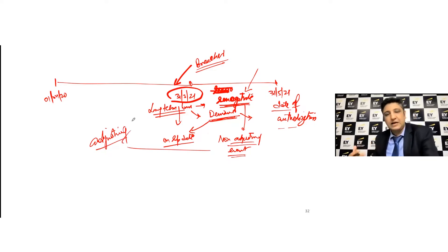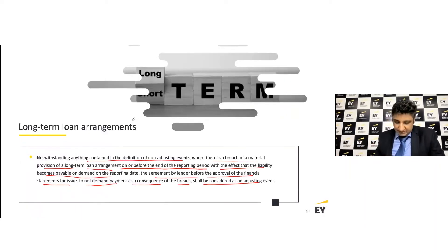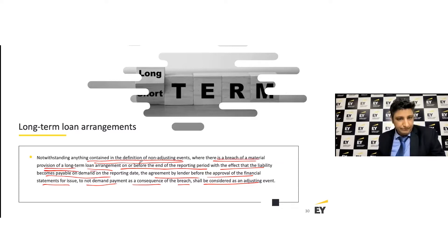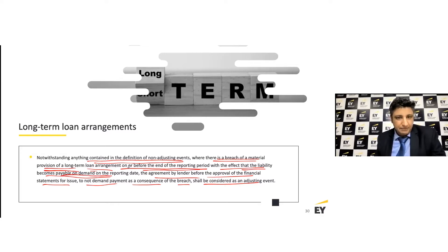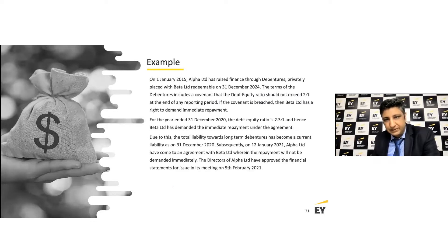This is an exception to the rule. Irrespective of what we have learned about non-adjusting events, when there is a breach of a material provision of a long-term loan on or before the end of the reporting period — thereby making that loan payable on demand — if there is an agreement by the lender before the date of authorization to not demand payment, then you can reinstate that loan as a non-current liability. That is the crux of this discussion.